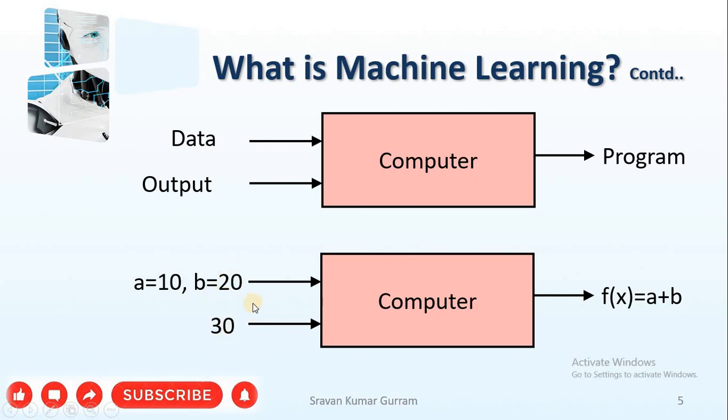We are giving these two to the computer. The machine can learn with the help of this data and that can create one model or simply that can create one equation. After analyzing the data, that can learn, that can create a formula like A plus B. One function, the function is A plus B. It can create a function which tells the relation between data and that output. That is nothing but f of x equals to A plus B. This is just like a program.